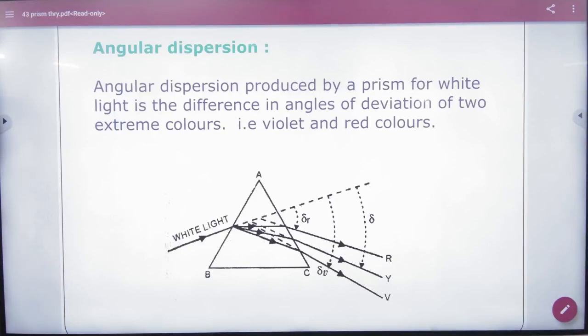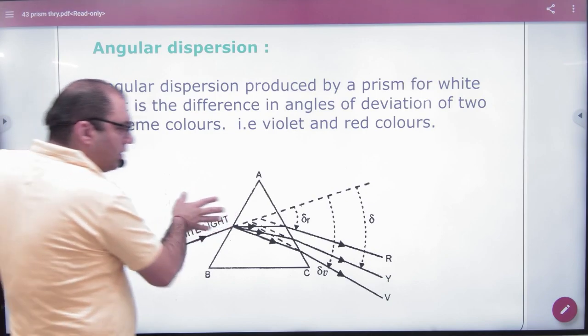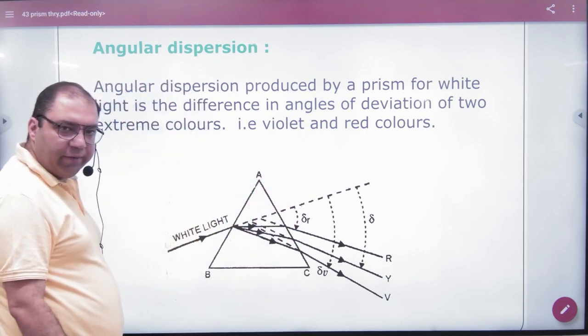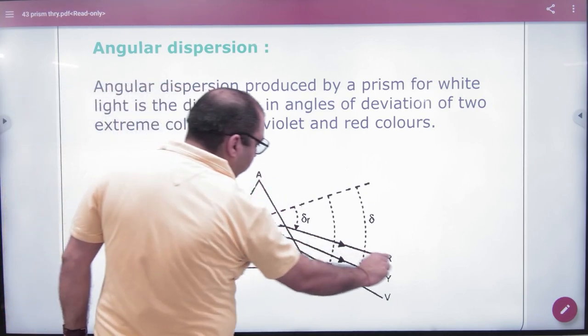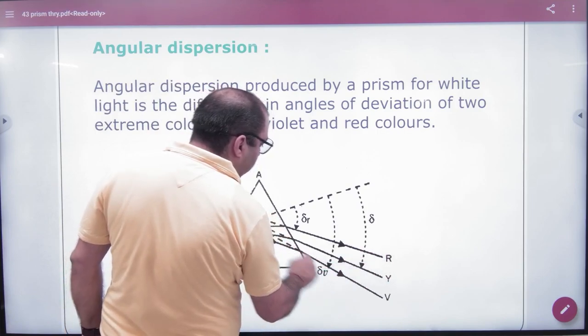So in angular dispersion, what will be told? It's white light. There will be white light split in seven colors. So in this, red has less deviation and violet has more.